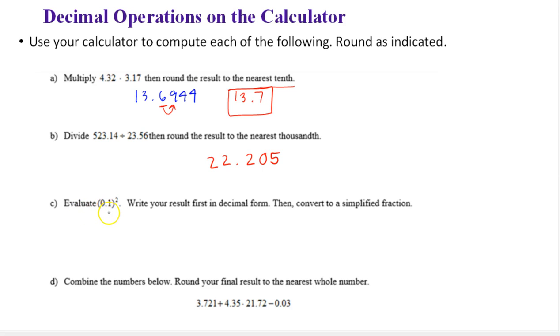Evaluate 0.1 squared. Write your result first in decimal form, and then convert to a simplified fraction.